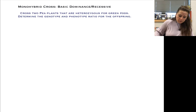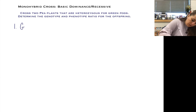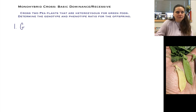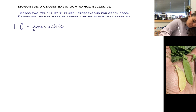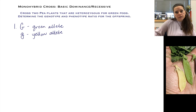The first step is to assign your alleles. I'm going to use a capital letter for the dominant allele. Since these are green pods, I'll use a big G, which will code for the green allele, and then a little g that will code for yellow, which is the recessive allele. I define dominant with an uppercase letter and recessive with a lowercase letter — that's a pretty standard rule of thumb.